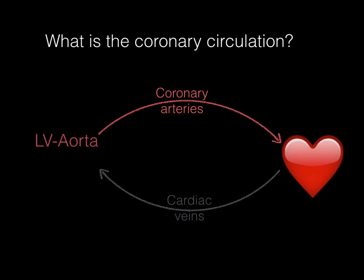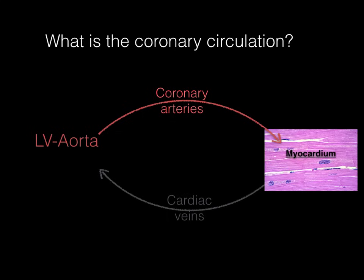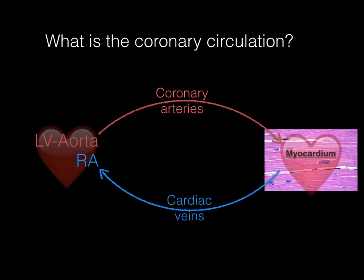By heart, we mean the left ventricle through the aorta. The first branches off the aorta are the left and right coronary arteries, which supply the myocardium and the epicardium. The deoxygenated blood is then brought back to the heart via cardiac veins, specifically into the right atrium. So coronary circulation: blood flows from the heart through coronary arteries to the heart, and by cardiac veins back to the heart.